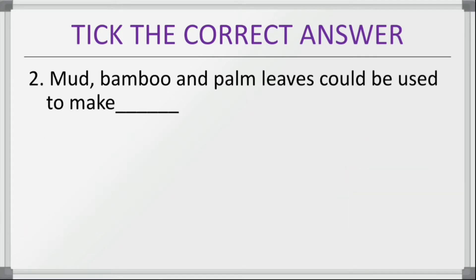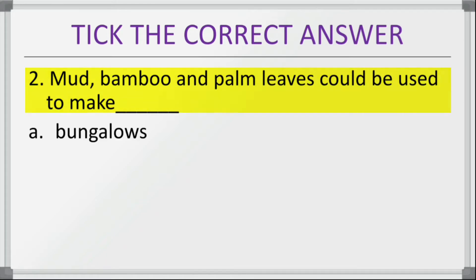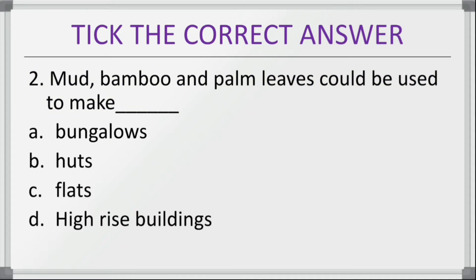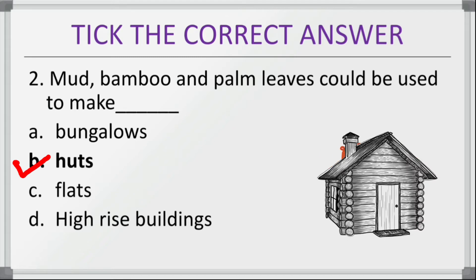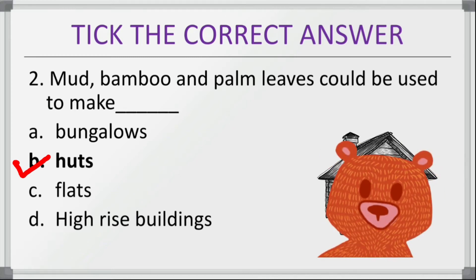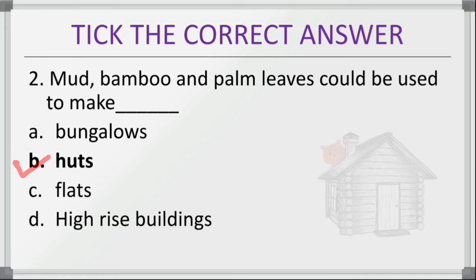Next question: mud, bamboo and palm leaves could be used to make — bungalows, huts, flats, or high rise buildings? For what purpose can we use mud, bamboo and palm leaves? The correct answer is huts. The use of mud, bamboo and palm leaves can be done to build huts.